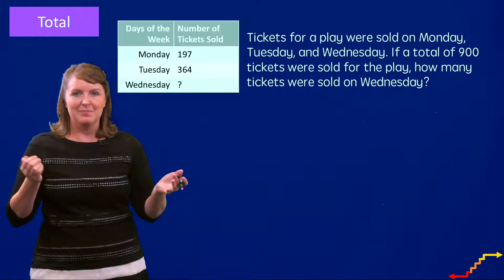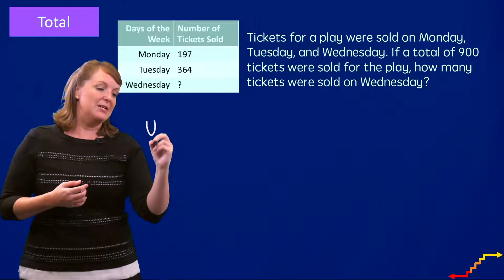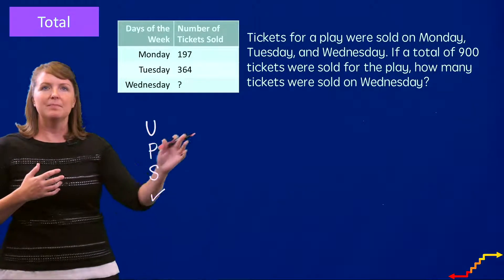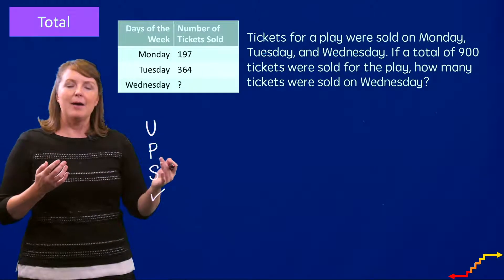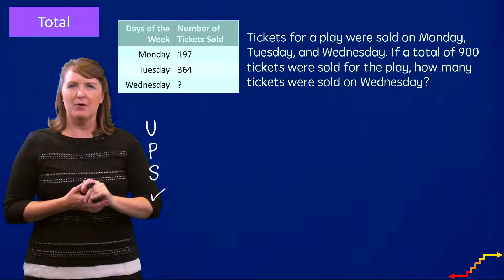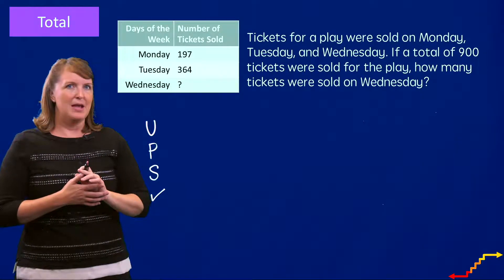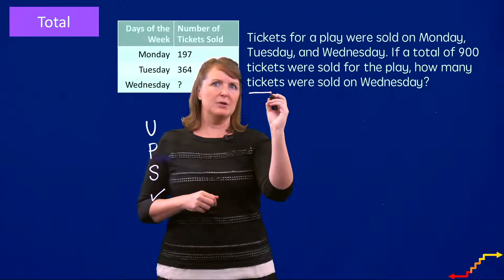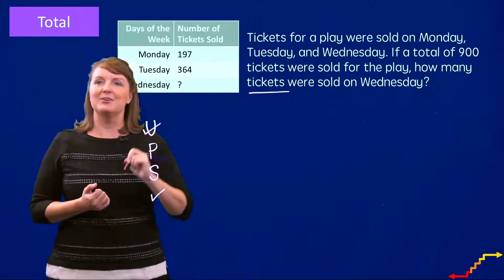Now let's solve this total problem. I see a mix of numbers and words, so I need to use my attack strategy of UPS Check. I'll do the understanding by reading the problem: 'Tickets for a play were sold on Monday, Tuesday, and Wednesday. If a total of 900 tickets were sold for the play, how many tickets were sold on Wednesday?' I also see a table that tells me tickets sold on Monday and Tuesday, but I don't know the Wednesday part. I'm focusing on tickets, so I'll underline the word 'tickets' to help me focus on the numbers about tickets.